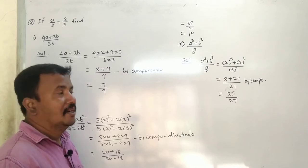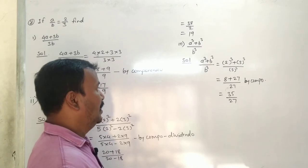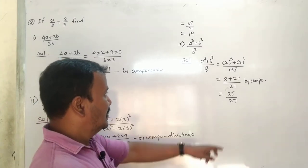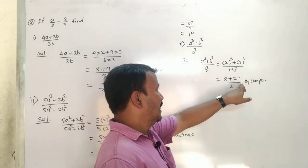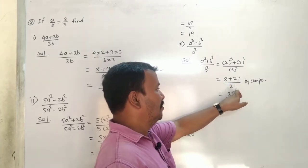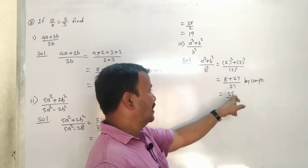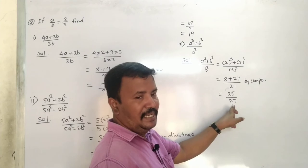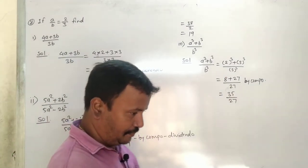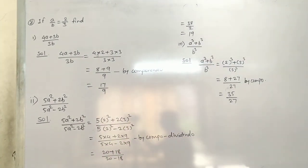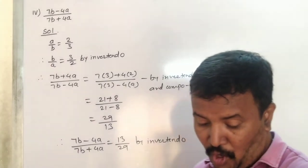20 plus 18 is 38, and 20 minus 18 is 2. So 38 divided by 2, the answer is 19. Third sum: a cube plus b cube upon b cube. So 2 cube plus 3 cube upon 3 cube. 2 cubed is 8, 3 cubed is 27. So 8 plus 27 divided by 27, which equals 35 divided by 27.